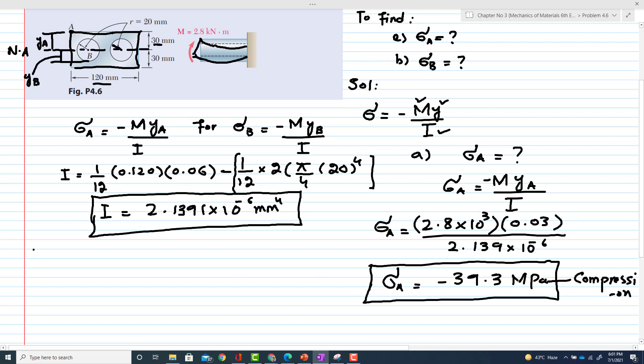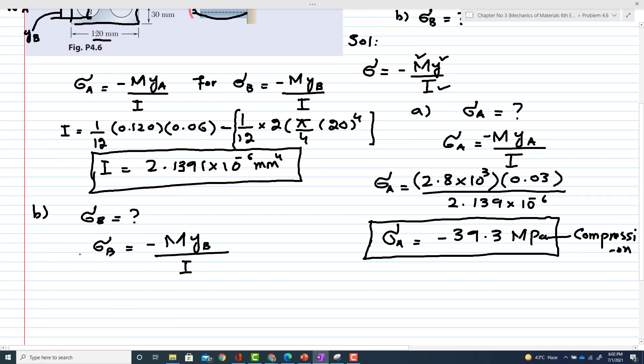Now we will move toward part B: find the stress at point B. Again, stress at point B is σB = -MyB/I. You can see that YB is downward distance from centroidal axis to the point. This distance is actually the radius, which is 20 millimeters, but it is downward, so YB will be counted as negative.